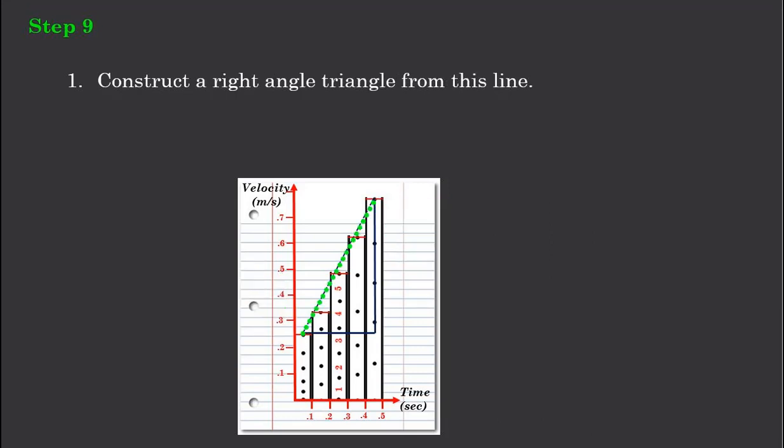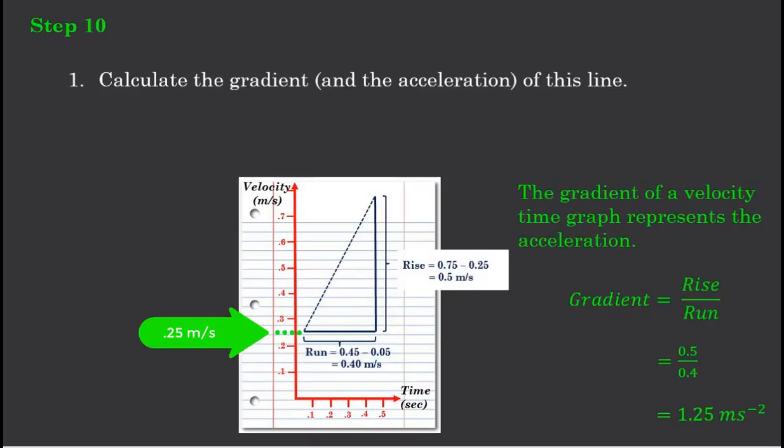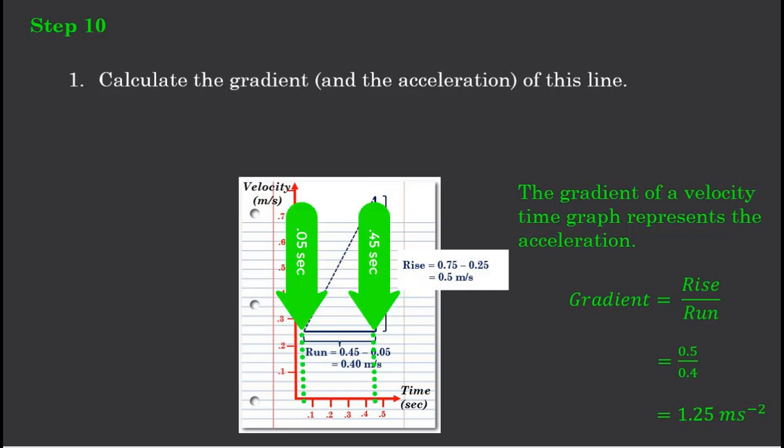Finally, if I turn it into a triangle, I can work out the rise over the run. In this fictitious example, I've got a rise from down the bottom here of 0.025 all the way up to 0.075. That represents a rise of 0.5 of a metre per second. And the run goes from 0.05 to 0.45, and that is a run of 0.4 seconds.